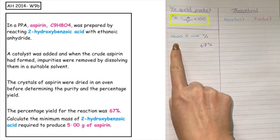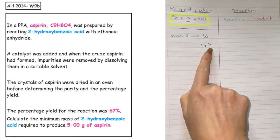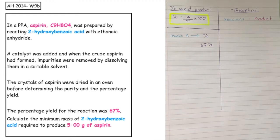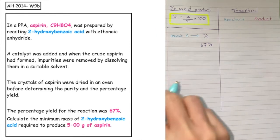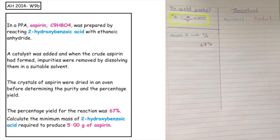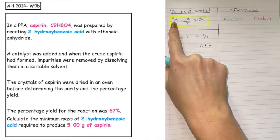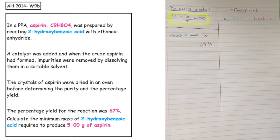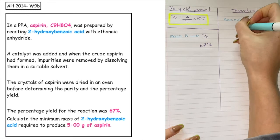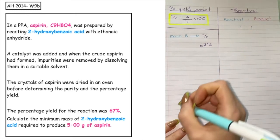We know that there's a relationship between the mass of reactant and the percentage yield of our product. We have to be able to work out the theoretical yield of our reactant to begin with. This is an example of a reverse percentage yield. Remember, percentage yield is about the product — we have the yield of product and we have the actual mass that we want to produce. The ratio for our reactant to product is a one-to-one ratio.